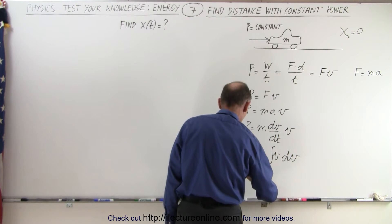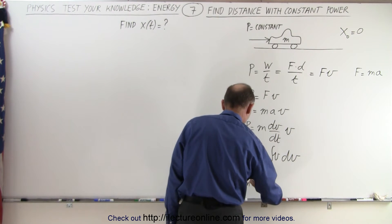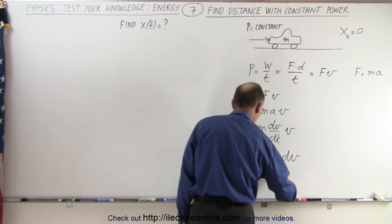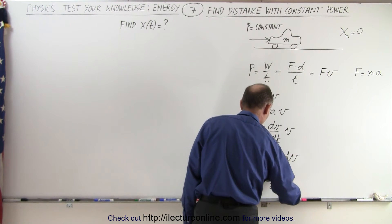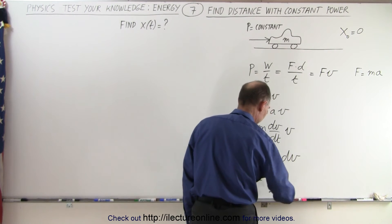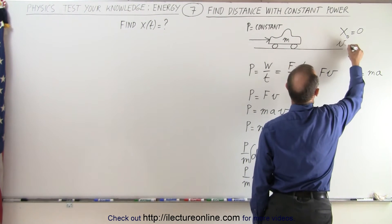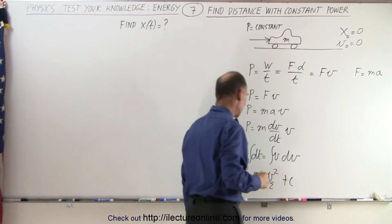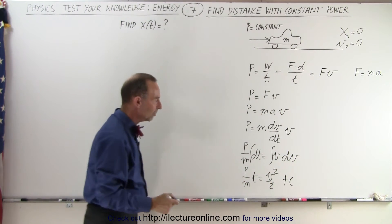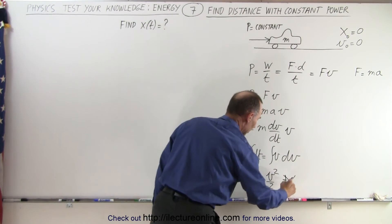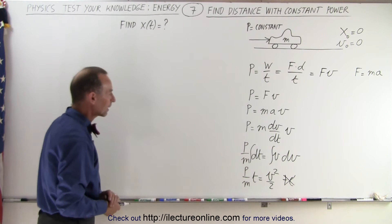So when we integrate that, we can say that P/m times t is equal to v²/2, that's the integral of that, plus the constant of integration. But let's assume that v initial equals zero. So if initial velocity equals zero, that means the constant of integration cancels out.